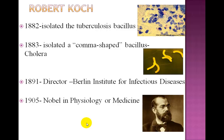Koch also worked with other bacteria. In 1882, he isolated the bacteria that causes tuberculosis, which is also rod-shaped, thus called the tuberculosis bacillus. In 1883, he interrupted his work with TB and started studying cholera in Egypt and India, where he isolated a comma-shaped bacteria and confirmed John Snow's suspicion that water is key to its transmission. In 1891 he became director of the Berlin Institute for Infectious Diseases, and in 1905 Robert Koch received the Nobel Prize in Physiology or Medicine.